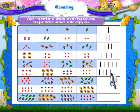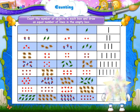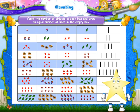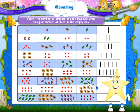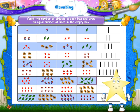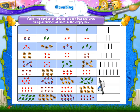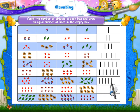Very good, Stari! Let's continue. Seven triangles. Seven kites. Seven flowers. Seven leaves. Draw seven lines.